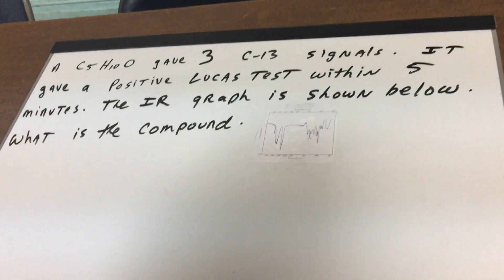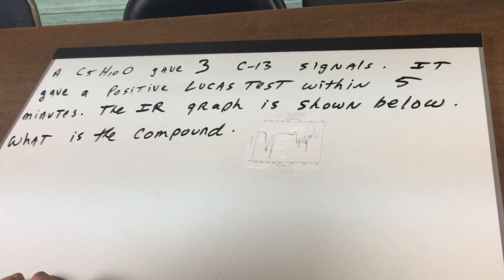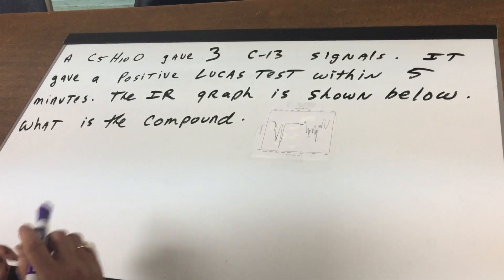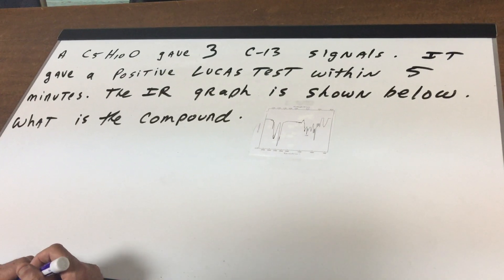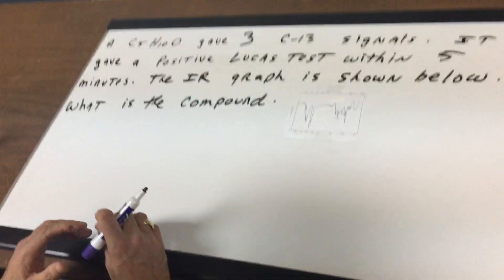I give you a C5H10O compound and I say to you it gave three carbon-13 signals. It gave a positive Lucas test within five minutes and the IR graph is shown below. Now we want to see what is the identity.